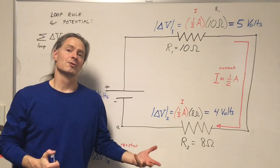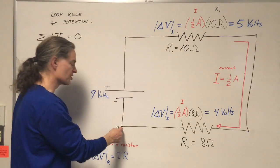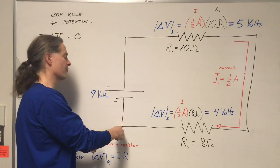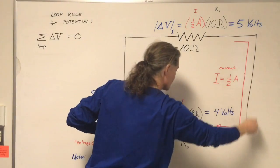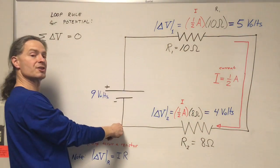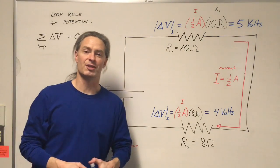This amounts to treating potential self-consistently. The electric potential at this point is whatever it is. If I start here and go all the way around the circuit, the total change in electric potential has to be zero. That's the loop rule for electric potential.